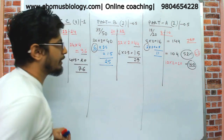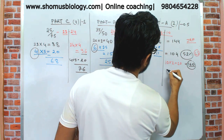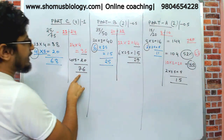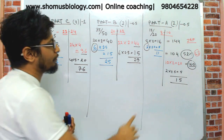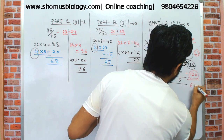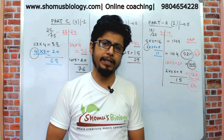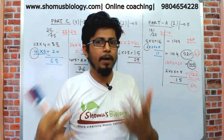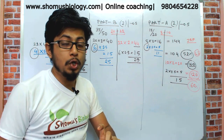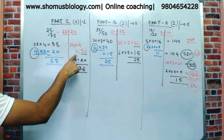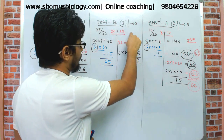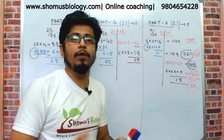Now accounting for wrong answers in the JRF scenario: 4 wrong in Part C at 5 marks each gives 20 deducted, leaving 76. Six wrong in Part B at 2.5 marks each gives 15 deducted, leaving 29. Two wrong in Part A gives 5 deducted, leaving 15. Total: 76 plus 29 plus 15 equals approximately 120. A score of 120, which is 60 percent, is the borderline to qualify JRF in the general category, as the cutoff has not exceeded 60 percent in recent years.